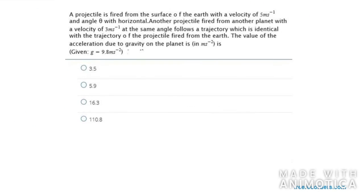Let's move on to the next question. A projectile is fired from the surface of the earth with a velocity of 5 meter per second at angle theta with horizontal. Another projectile is fired from another planet with a velocity of 3 meter per second at the same angle, follows a trajectory which is identical with the trajectory of the projectile fired from the earth. The value of acceleration due to gravity on the planet is... First of all I need to write equation of trajectory.